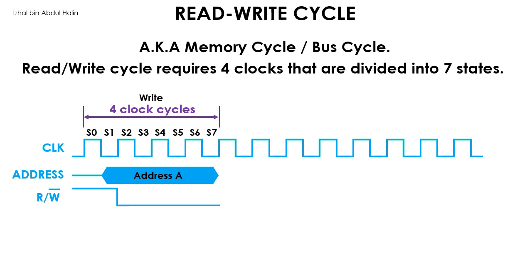The data to be written into memory must be present on the data bus at state 3. We will call it data X. It will remain there until the end of the write cycle. At the end of the four clock cycles, data X would have been written to address A.